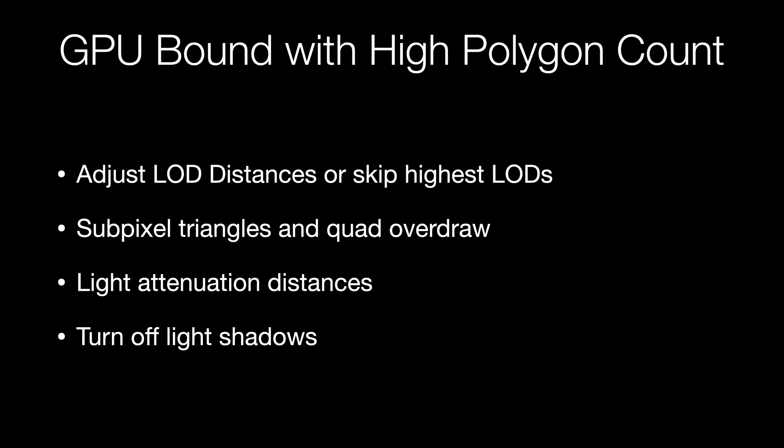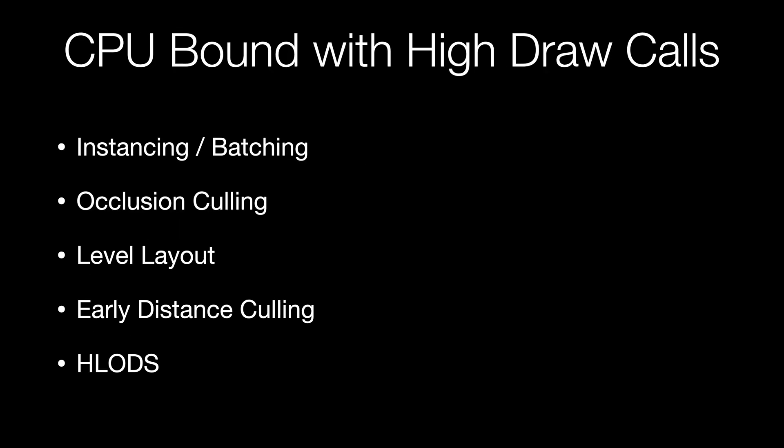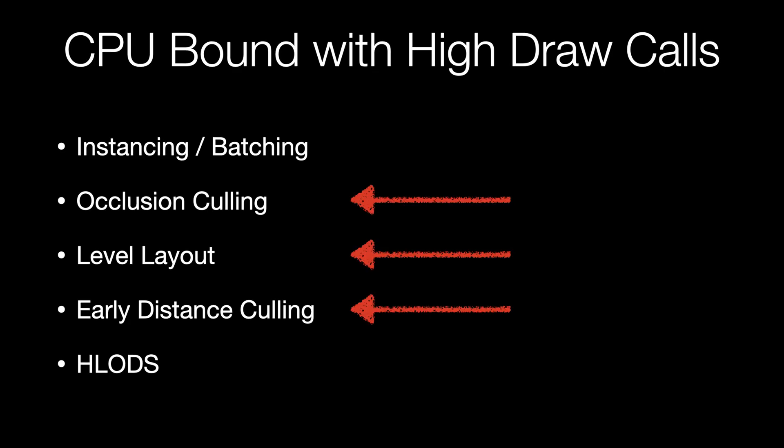If the polygon count is high and you're GPU-bound, you may need further analysis to discover which objects contribute most to the problem. But there are a few things to try first. Many of the items from Episode 5 on CPU-bound high draw calls also apply here, because preventing objects from drawing also reduces the overall polygon count. Specifically, that would be occlusion culling, level layout, and early distance culling.